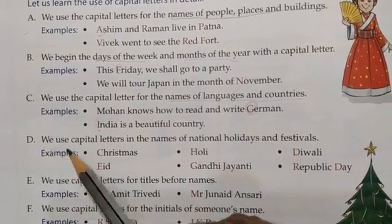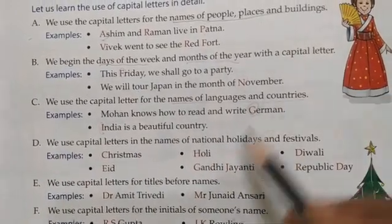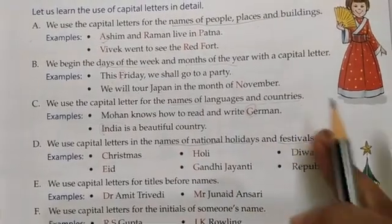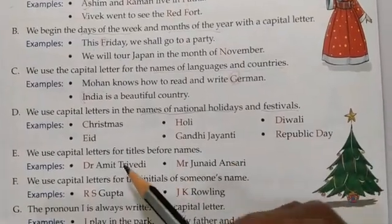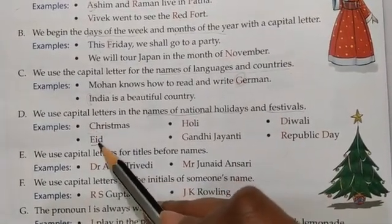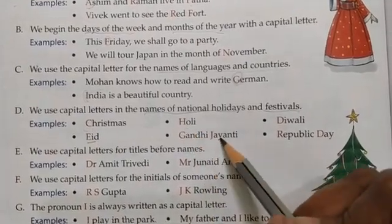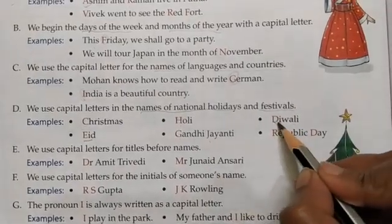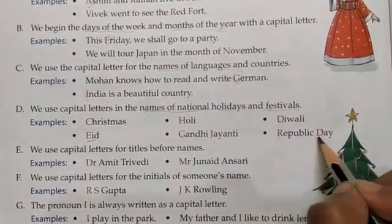We use capital letters in the names of national holidays and festivals. When talking about any national holiday or festival, we use the first letter of those words as capital. For example: Christmas — C capital; Eid — E capital; Holi — H capital; Gandhi Jayanti — G and J capital; Diwali — D capital; Republic Day — R and D capital.